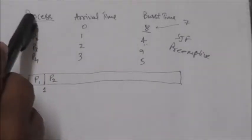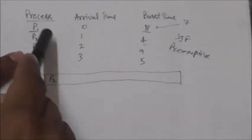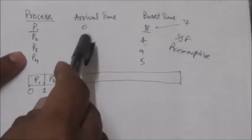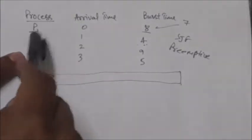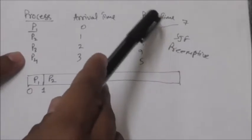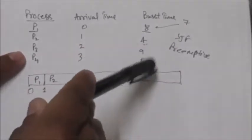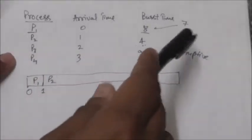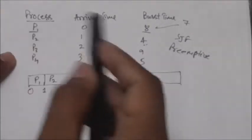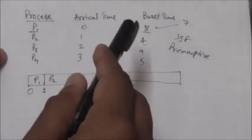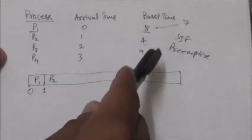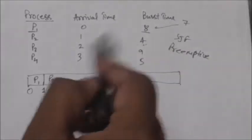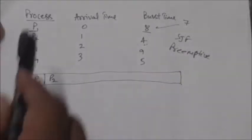Now consider four processes P1, P2, P3, and P4 with arrival times 0, 1, 2, and 3 respectively, and their next CPU burst times as given. We will see how the preemptive Shortest Job First scheduling algorithm — also called Shortest Remaining Time First, or SRTF — works.